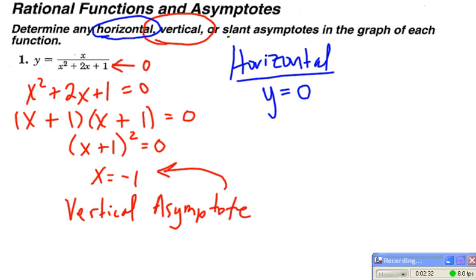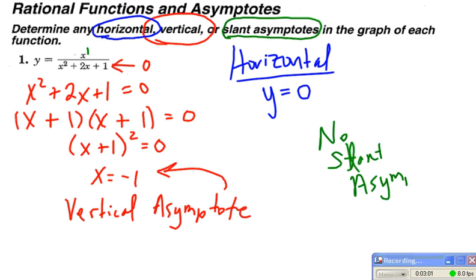And that leaves me with checking to see if I have any slant or oblique asymptotes. Slant asymptotes only occur when the degree of the numerator is exactly one more than the degree of the denominator. Since my numerator's degree is 1, that's actually less than the degree of the denominator, which is 2, and so there will be no slant asymptotes for this rational function.